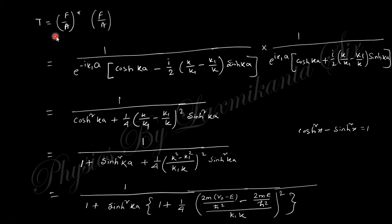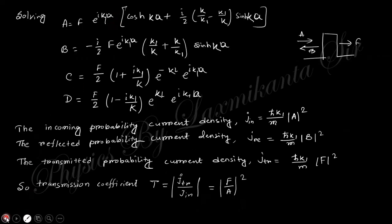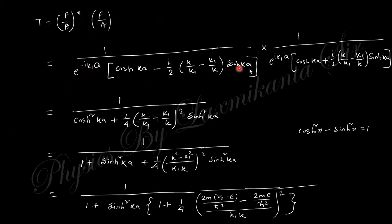F/A is obtained as one over a complex expression. The transmission coefficient is (F/A*) × (F/A). Taking the complex conjugate and multiplying, using the identity (a + b)(a − b) = a² − b², but because of the i² factor this becomes a² + b². You then use the identity cosh²(x) = 1 + sinh²(x), which gives you the final expression for T.